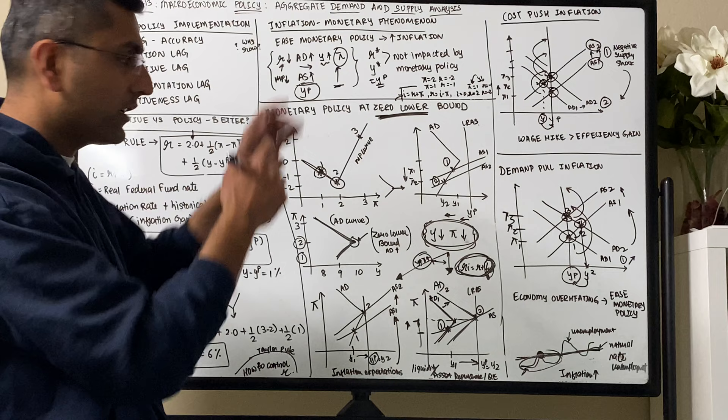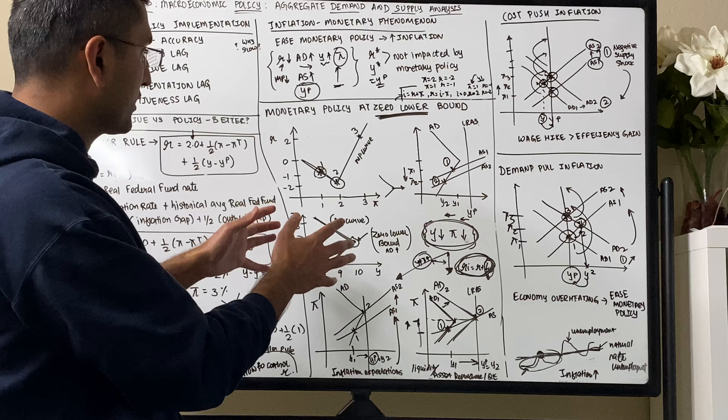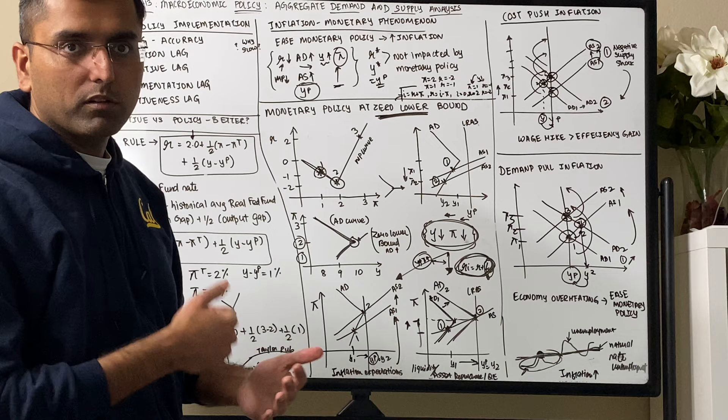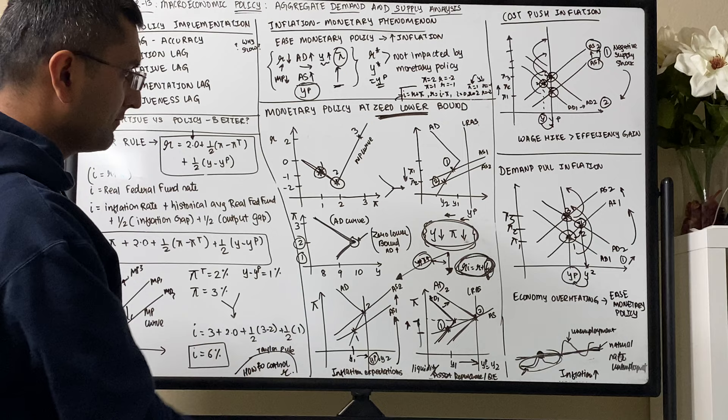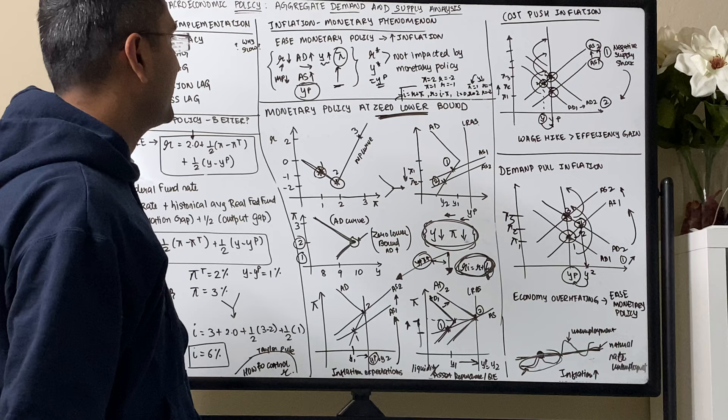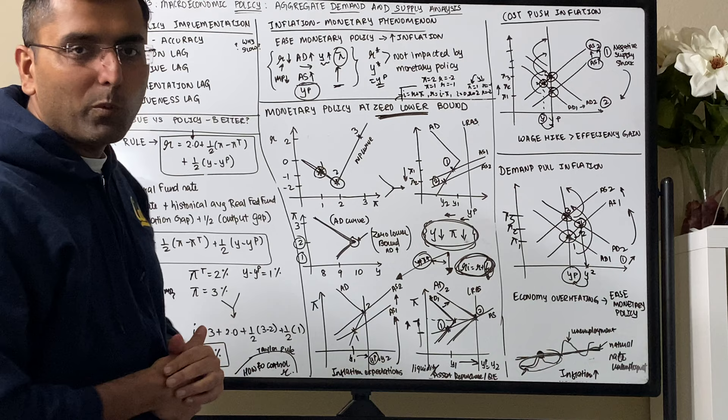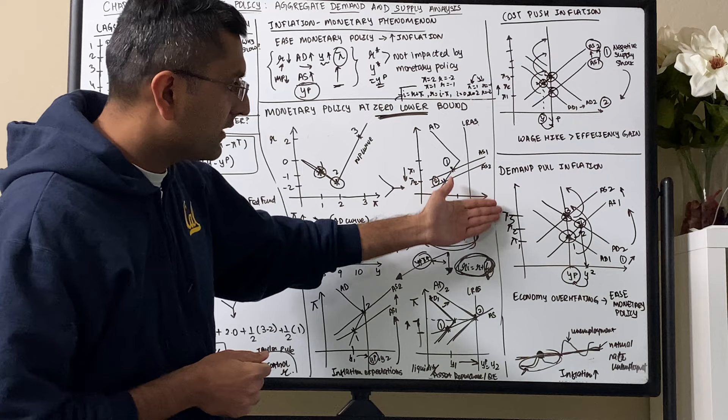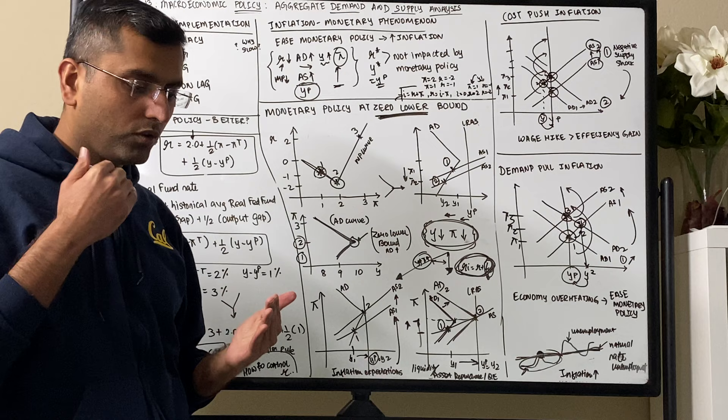The biggest takeaway is that even post the zero lower bound, the Federal Reserve has many instruments to help control the issue — where output falls and inflation falls — they can actually increase output and inflation to get back to steady state. This helps us understand how the Federal Reserve works: why Taylor's Rule can't be on autopilot, what kinds of inflation exist (demand-pull and cost-push), and how monetary phenomena always underlie inflation. The Federal Reserve can target inflation through monetary easing or tightening. Thank you.